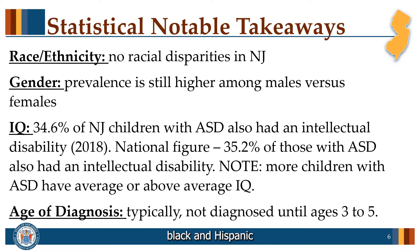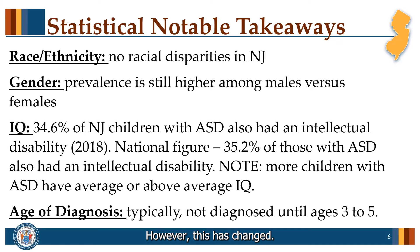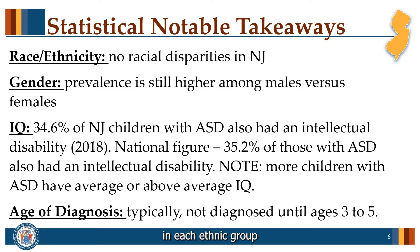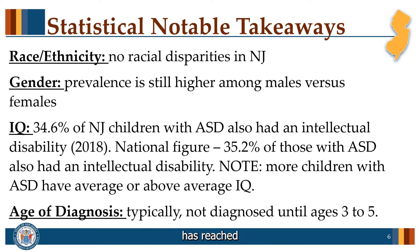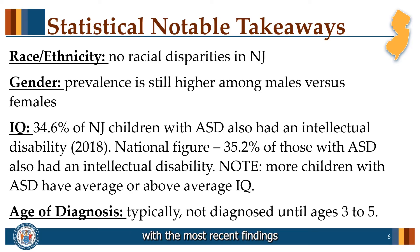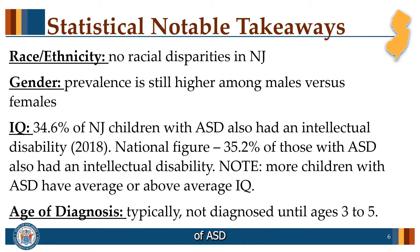Historically in New Jersey, Black and Hispanic children were diagnosed less often and at later ages than their white peers. However, this has changed. In 2014, New Jersey, for the first time ever, reported no racial disparities after prevalence in each ethnic group was nearly identical, demonstrating that public awareness about autism has reached minority communities. This trend continues with the most recent findings from the 2021 report. Nationally, disparities in the evaluation and diagnosis of ASD across racial backgrounds continue to persist.